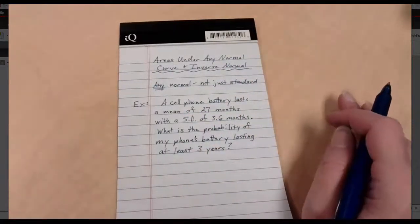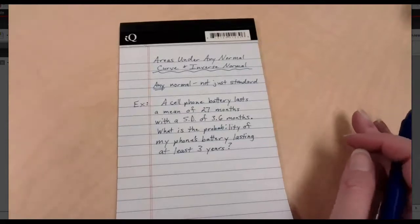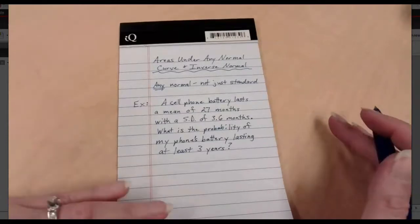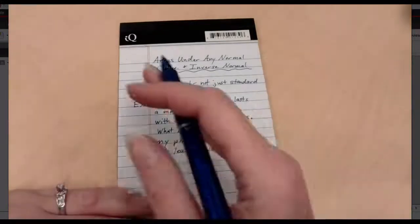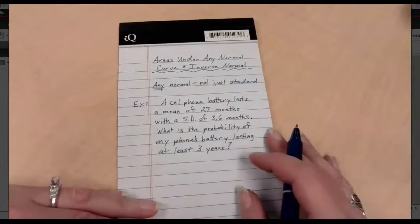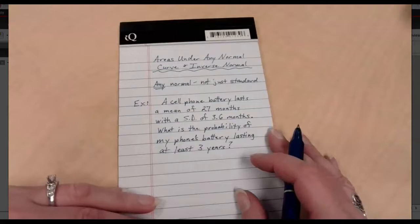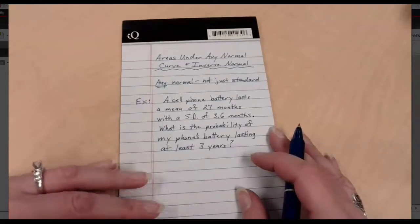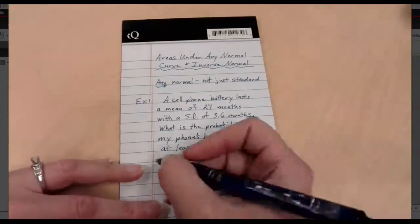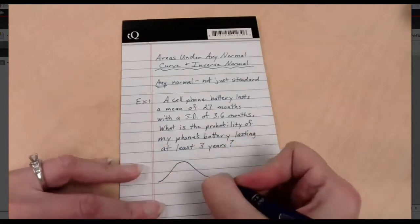And so again, once upon a time, what I would need to do is take my three years, and I would need to convert that to a z-score. And then it would be standardized, and then I could look everything up on a table. But maybe we have a different approach with today's technology.